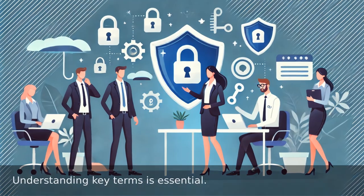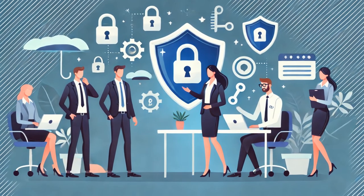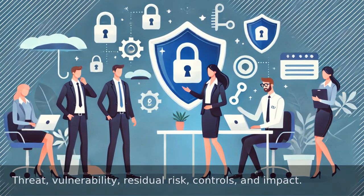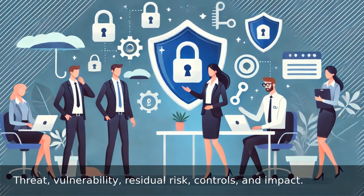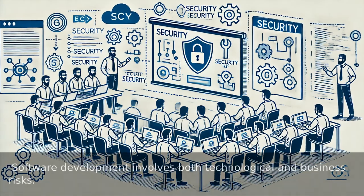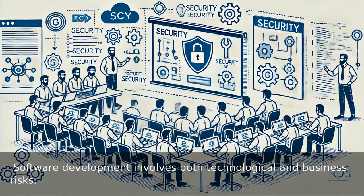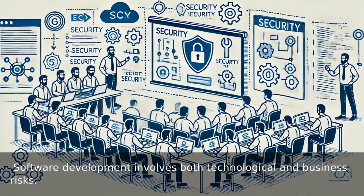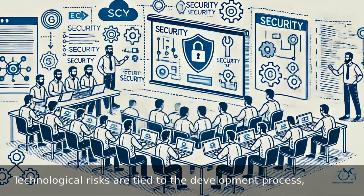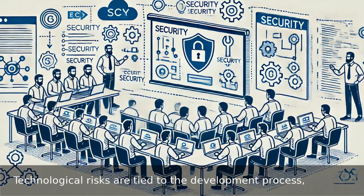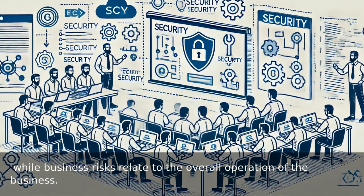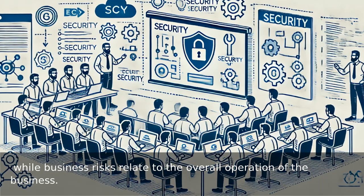Understanding key terms is essential: threat, vulnerability, residual risk, controls, and impact. Software development involves both technological and business risks. Technological risks are tied to the development process, while business risks relate to the overall operation of the business.